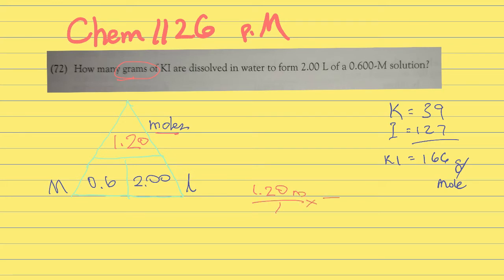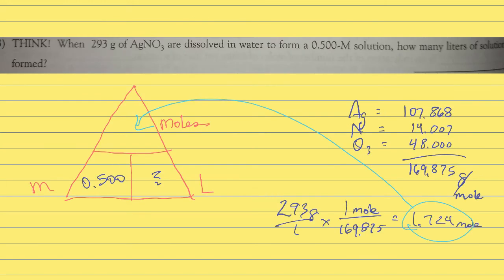I'll help you get it set up and then let you finish. We're going to do 1.2 moles times 166 grams per mole. We get that 166 by taking the mass of potassium plus the mass of iodine. Then you can finish the problem and you'll have the number of grams.